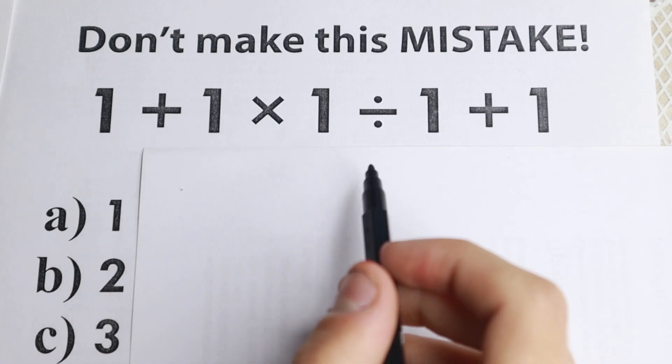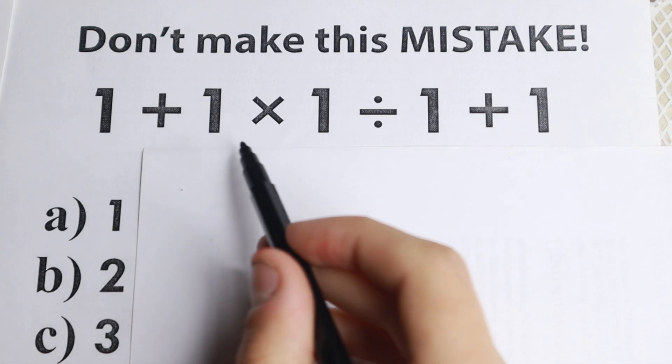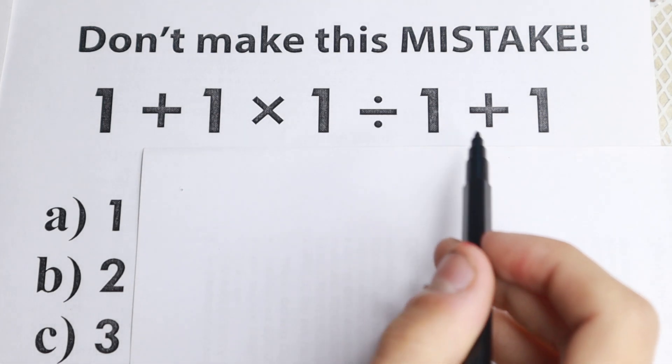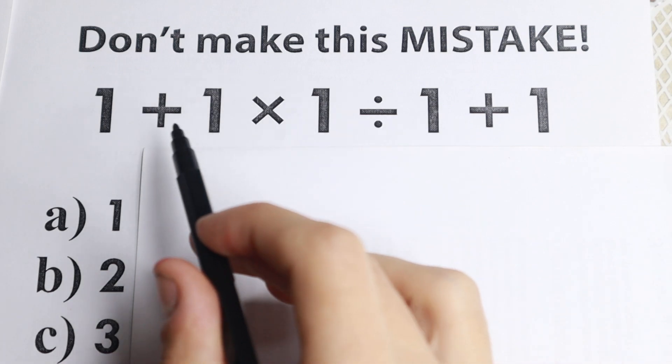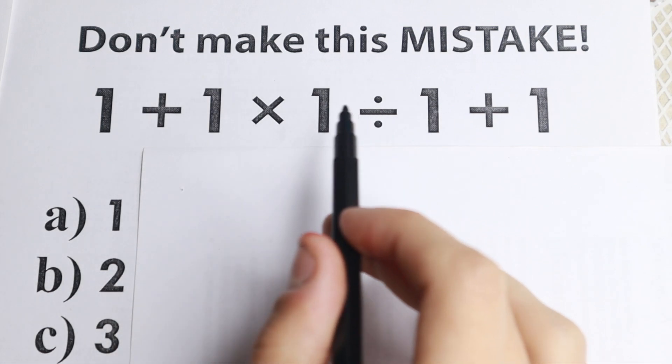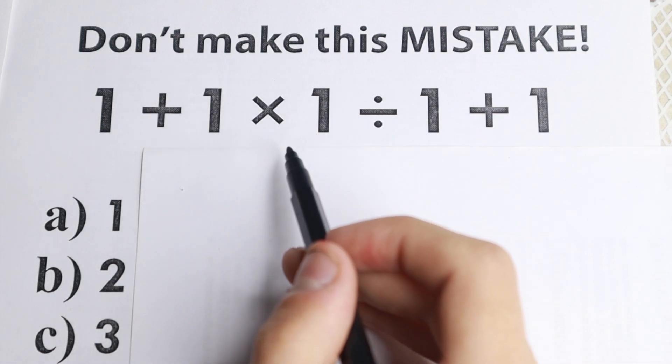So I don't want you to use your calculator and here is the problem. We have 1 + 1 × 1 ÷ 1 + 1. Very simple numbers like one, only one, division, addition and multiplication right here.